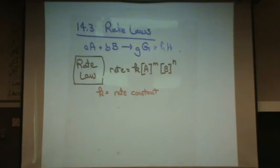It can change if the temperature changes. Usually as temperature goes up, the rate goes up and the rate constant will go up. We'll get a formula for that later called the Arrhenius equation.